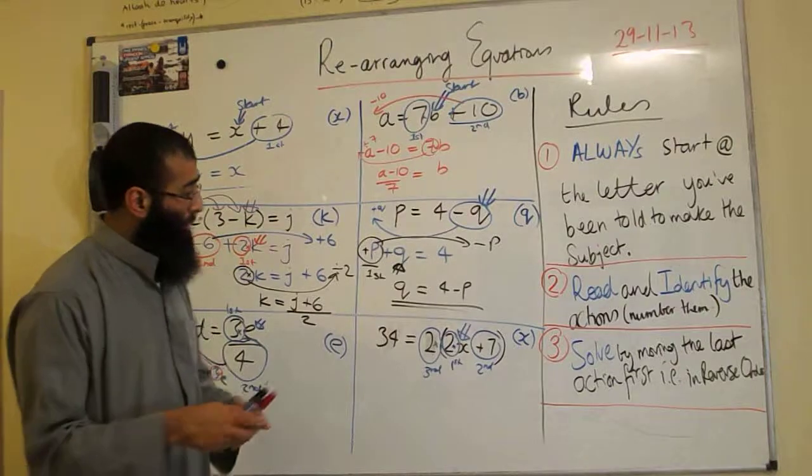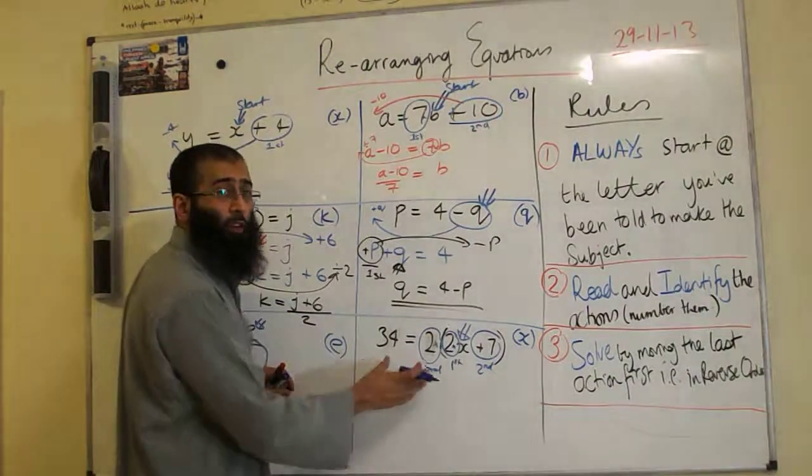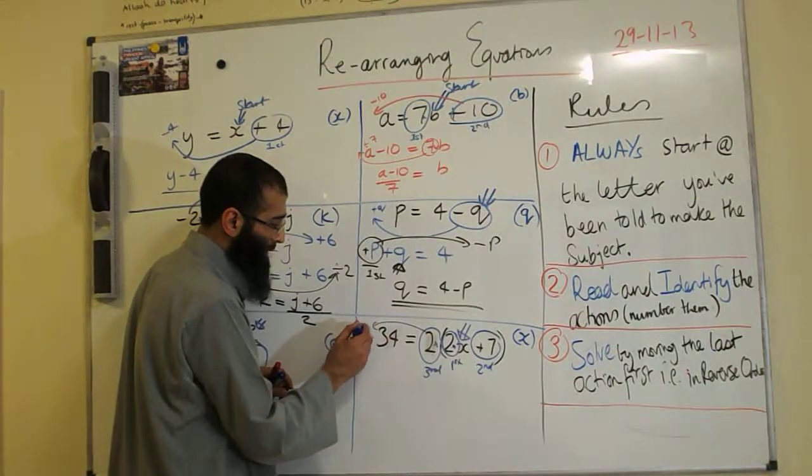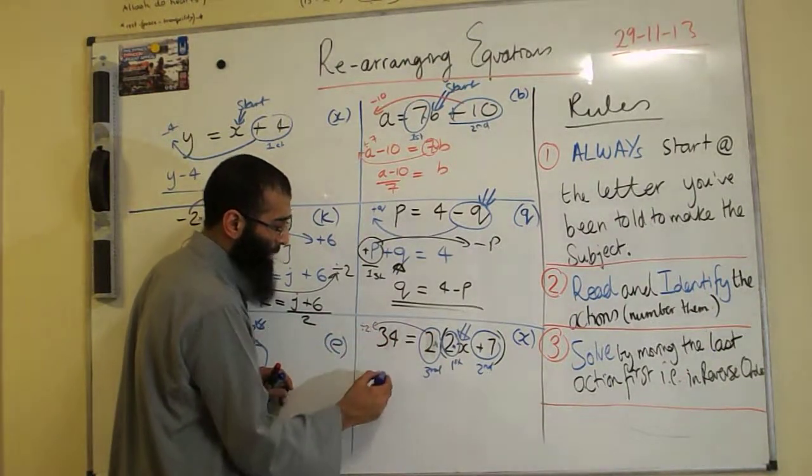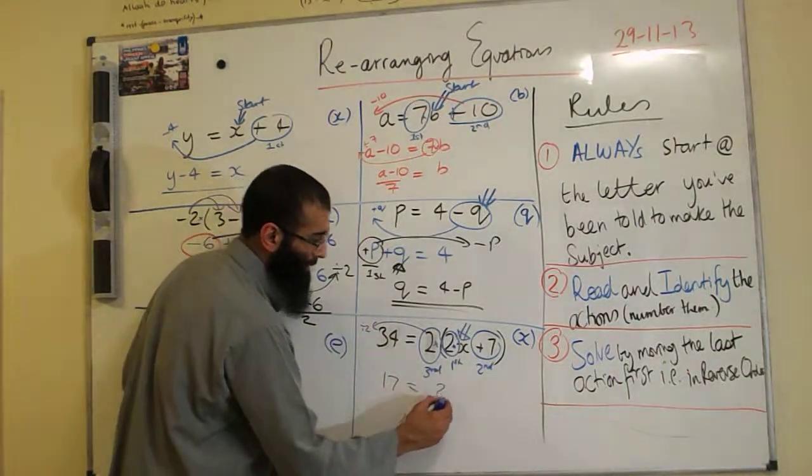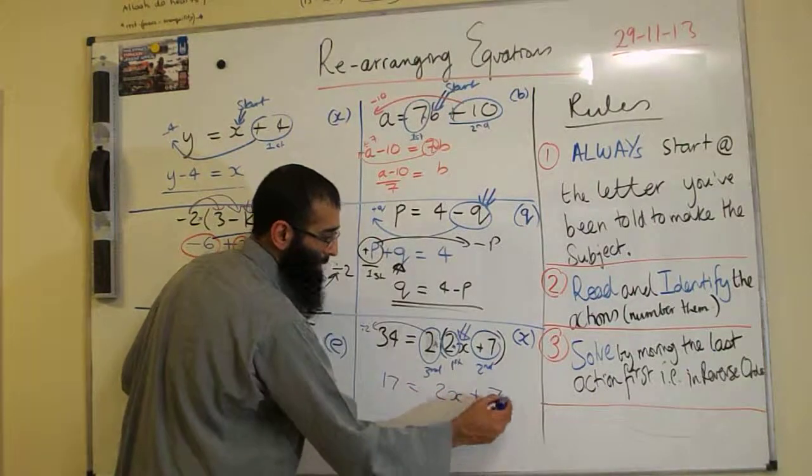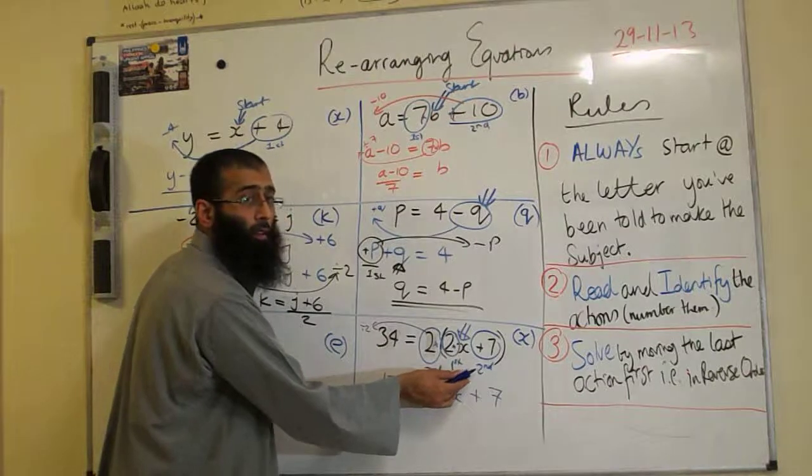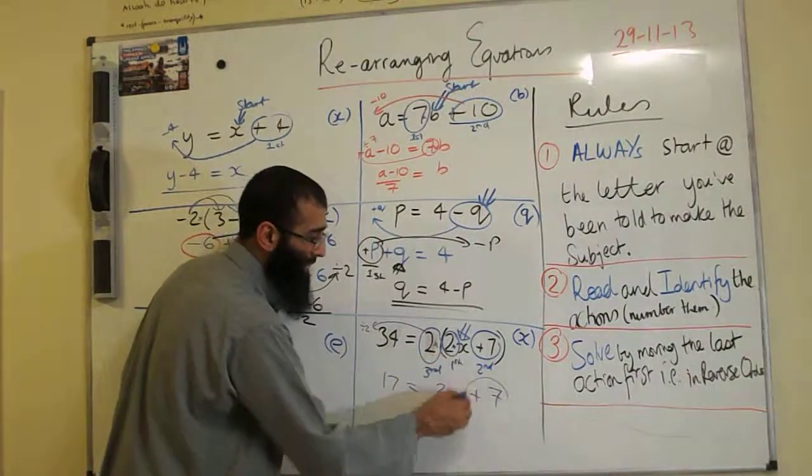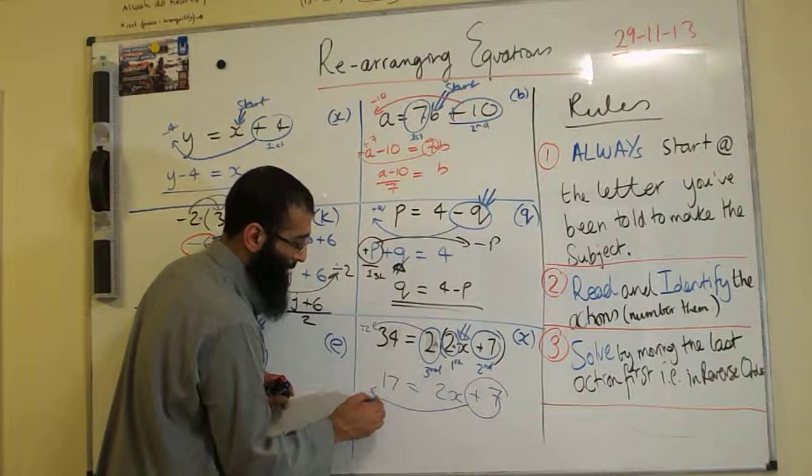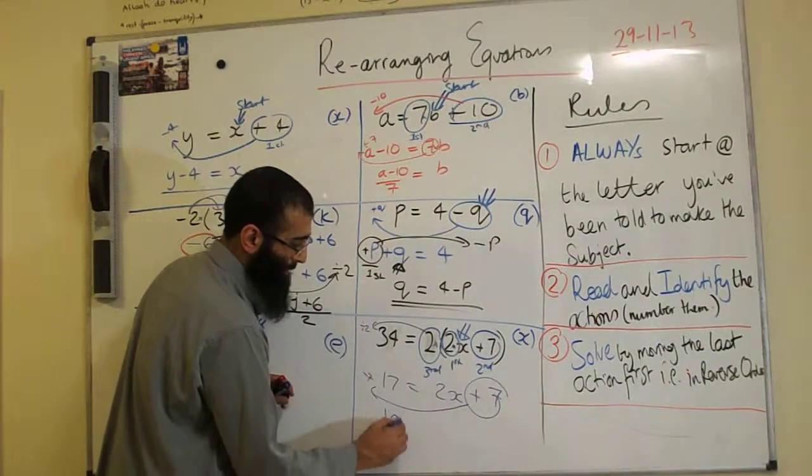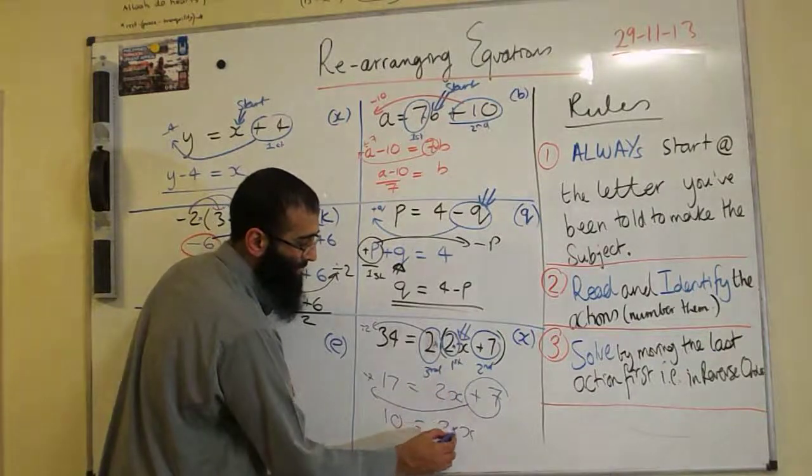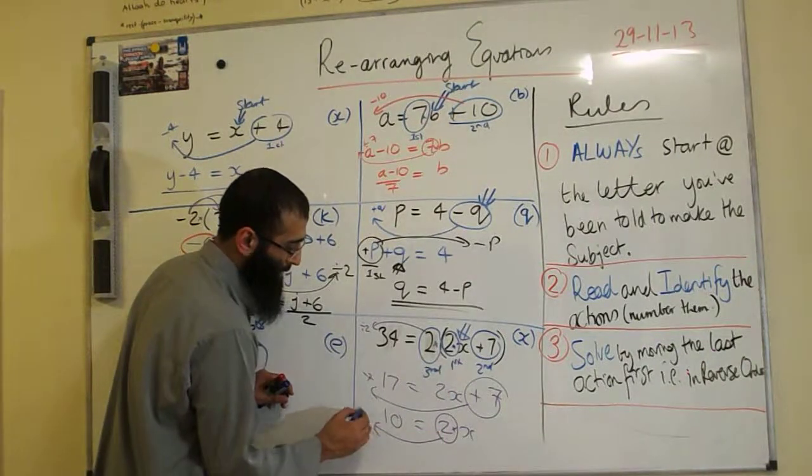So what do we do now? The third action is the first one we have moved. Hamza, opposite time by 2 is divide by 2. So 34 divided by 2 will give us 17. So we moved the third action first. Now we're going to move the second action. Opposite of plus 7 is minus 7. So it's 10. And we've got time by 2 is the first action. Opposite time by 2 is divide by 2.